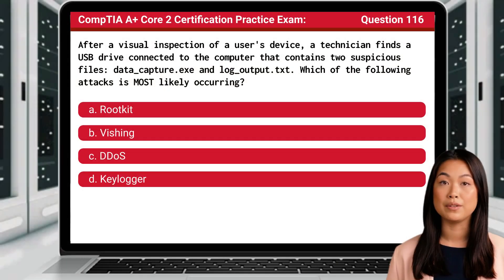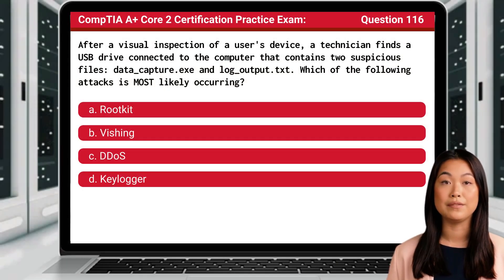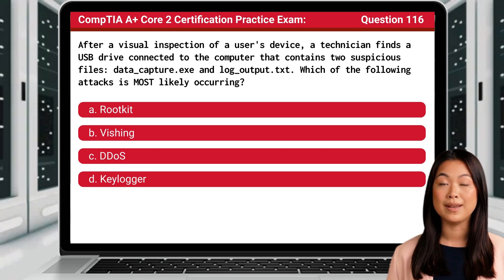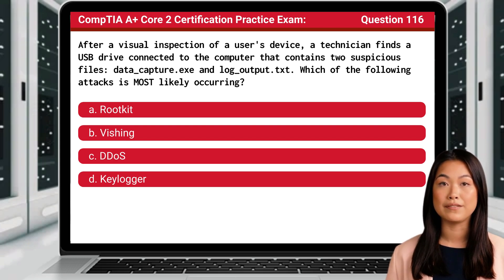Question 116. After a visual inspection of a user's device, a technician finds a USB drive connected to the computer that contains two suspicious files: data_capture.exe and log_output.txt. Which of the following attacks is most likely occurring?